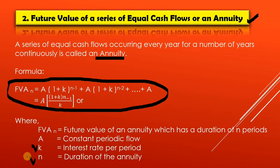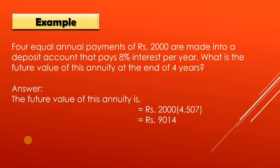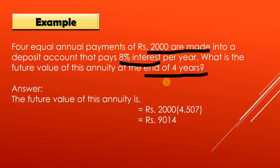Let us see an example of annuity under compounding. Four equal annual payments of Rs. 2,000 are made into a deposit account that pays 8% interest per year. What is the future value of this annuity at the end of 4 years?